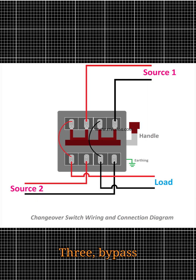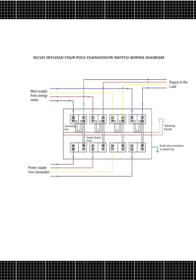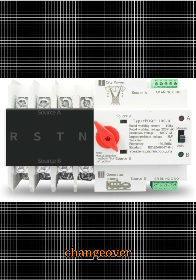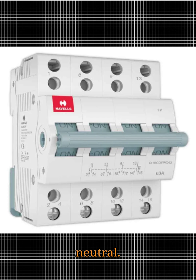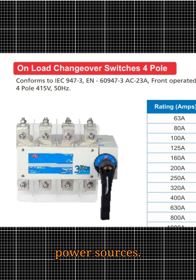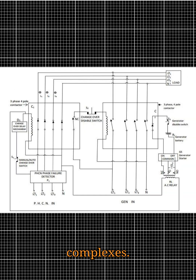3. Bypass changeover switch — used in critical applications such as factories and IT servers. Allows maintenance of the main changeover switch without interrupting the power supply. 4. Four-pole changeover switch — controls three-phase supply plus neutral, ensures complete isolation of power sources. Used in heavy industries and commercial complexes.